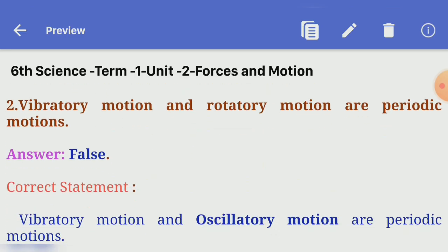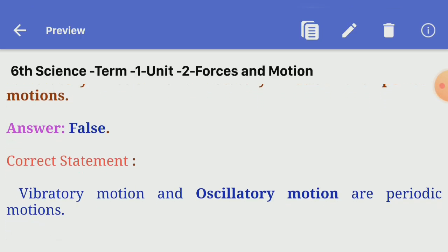Second one: vibratory motion and rotatory motion are periodic motions. Answer: false. Correct statement: vibratory motion and oscillatory motion are periodic motions.